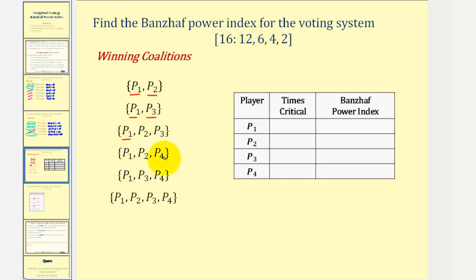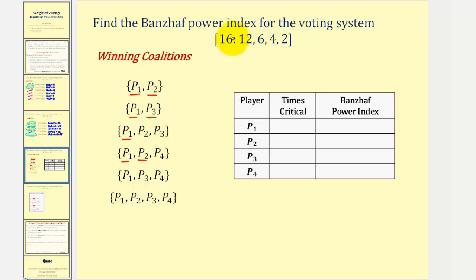Next we have players one, two, and four. If player one leaves, players two and four would have a weight of six plus two or eight — player one is critical. If player two leaves, players one and four have a combined weight of fourteen, which does not meet quota — therefore player two is critical. If player four leaves, the remaining weight would be twelve plus six or eighteen, which does meet quota — player four is not critical.